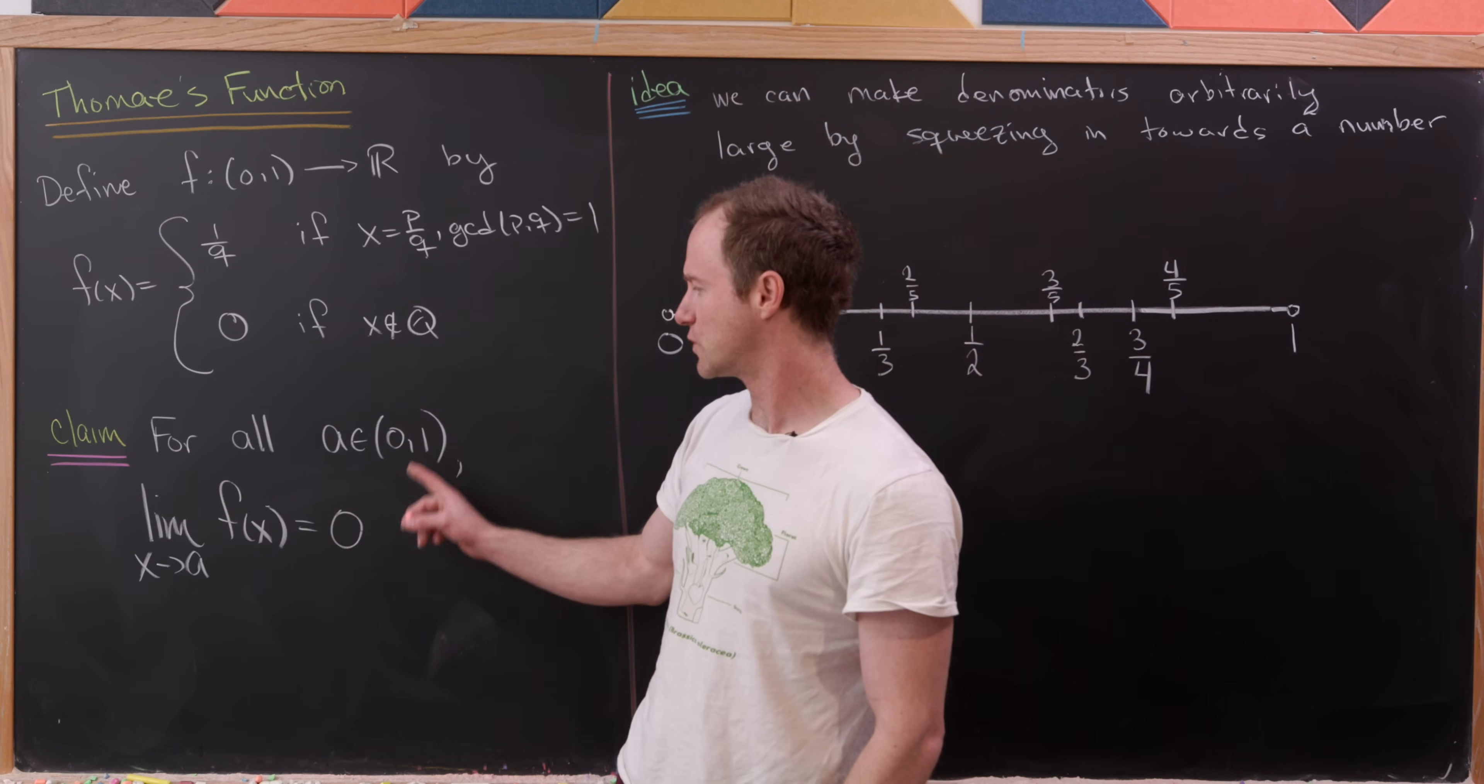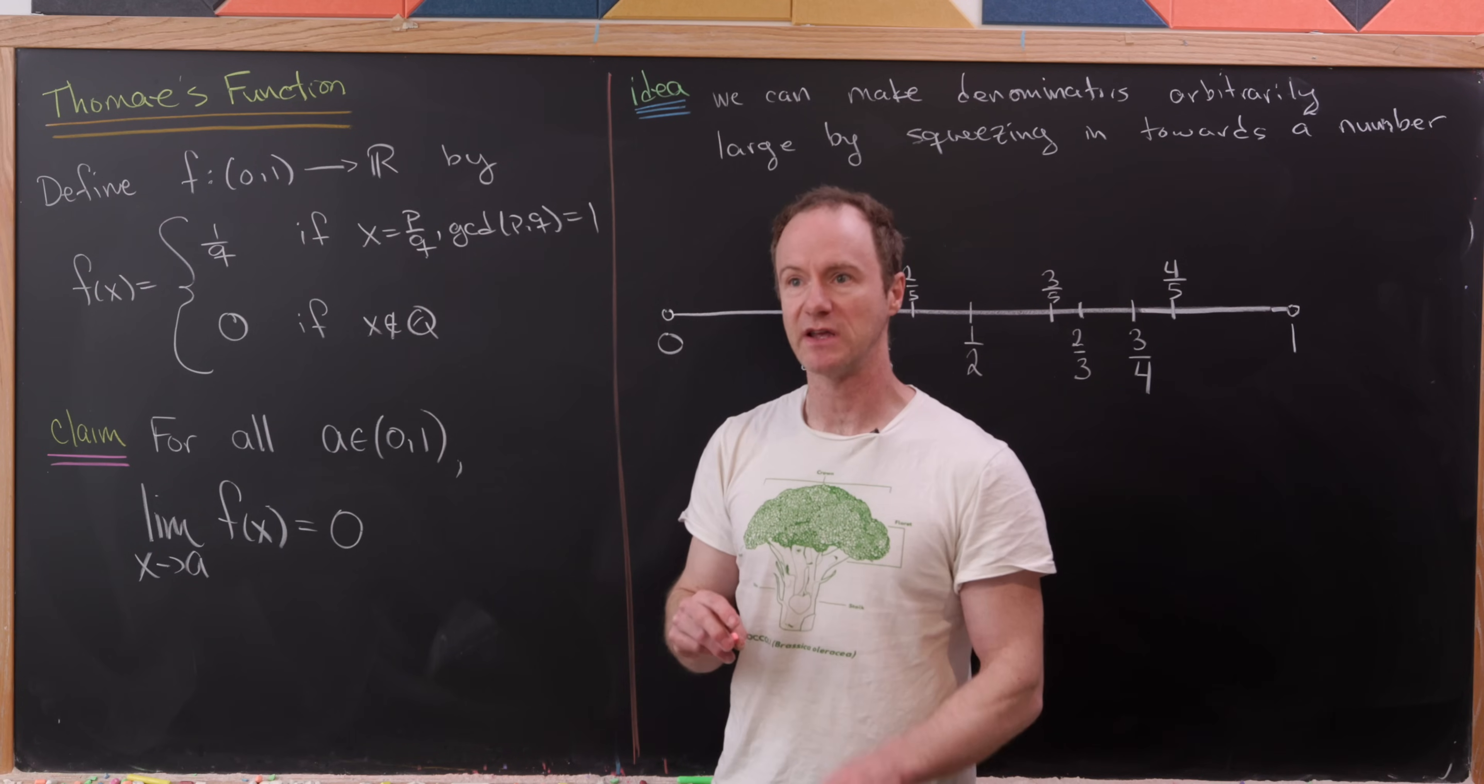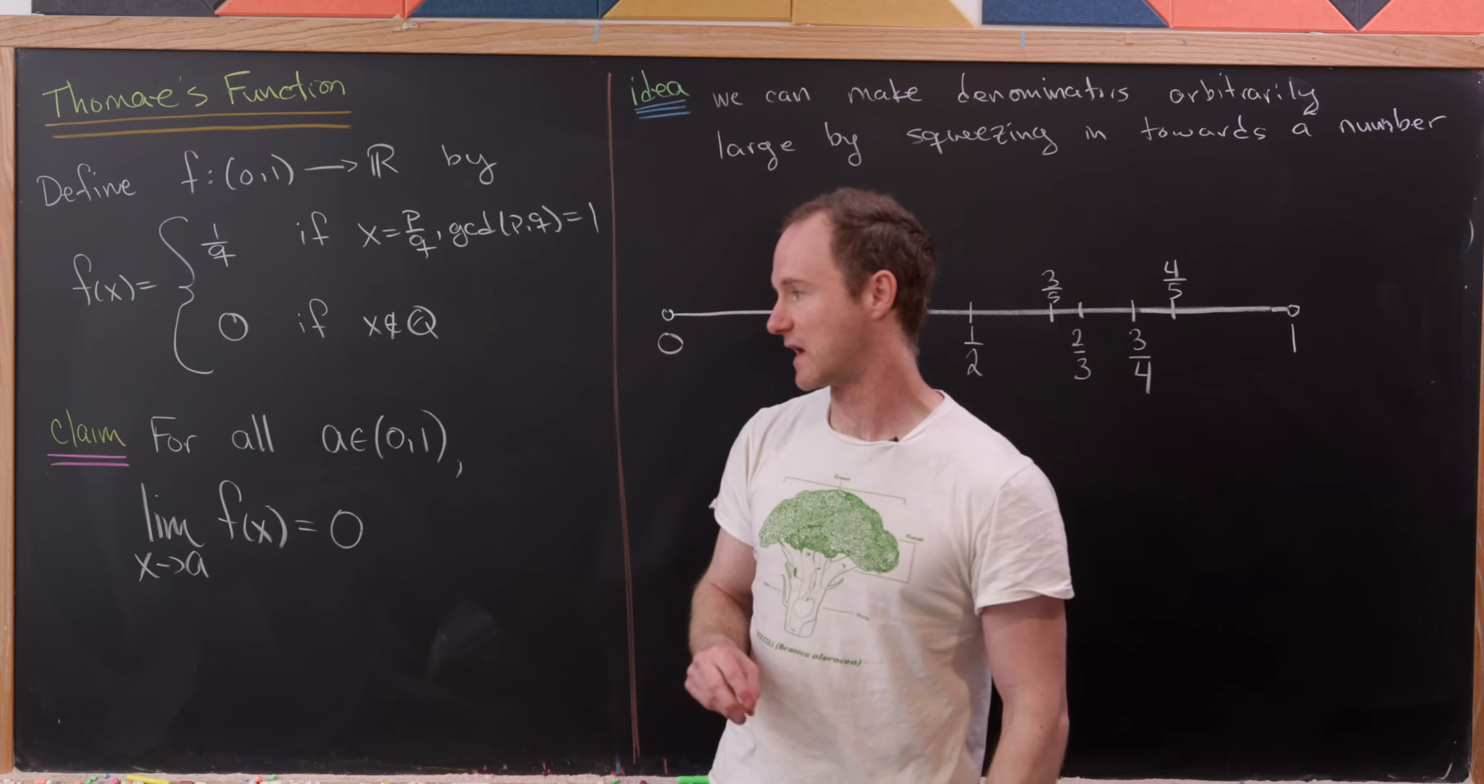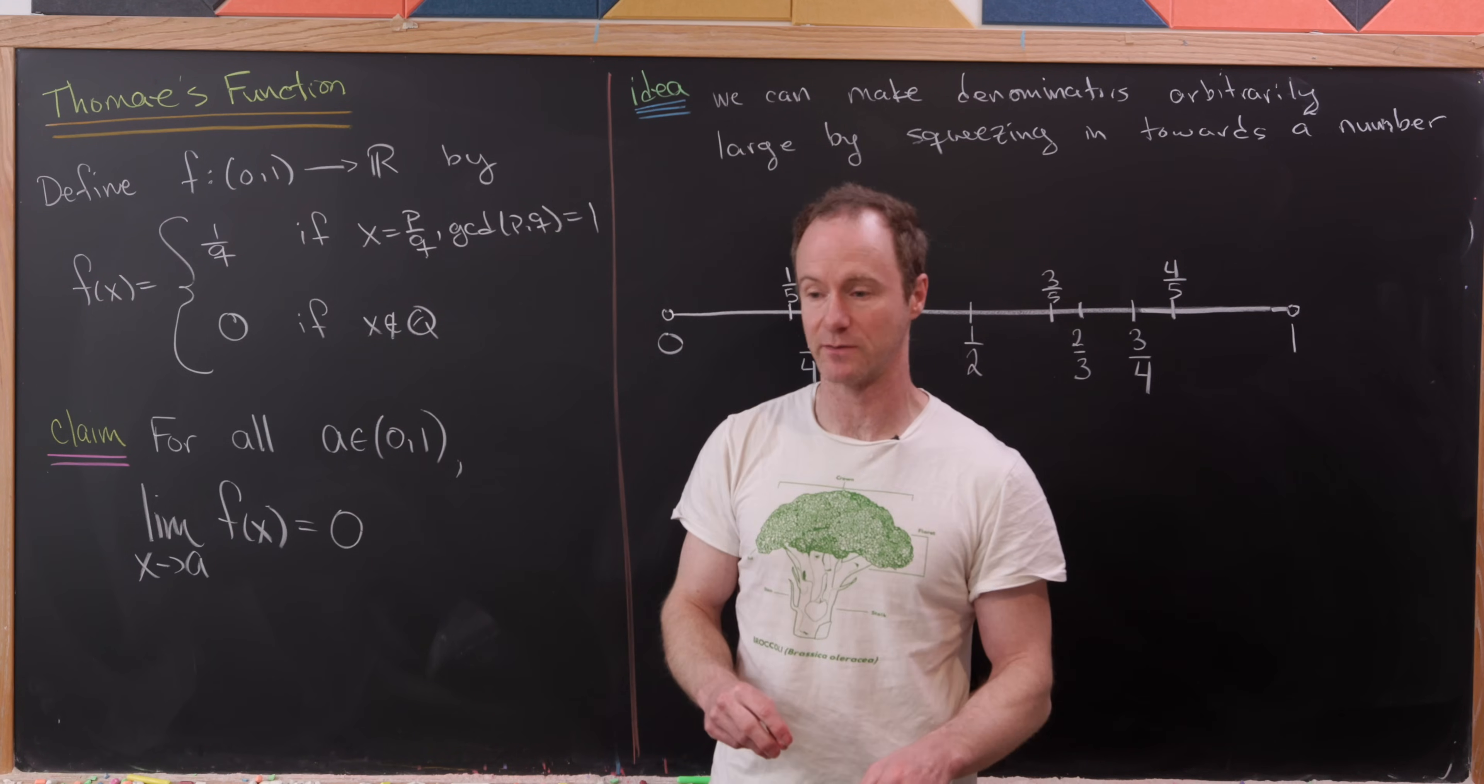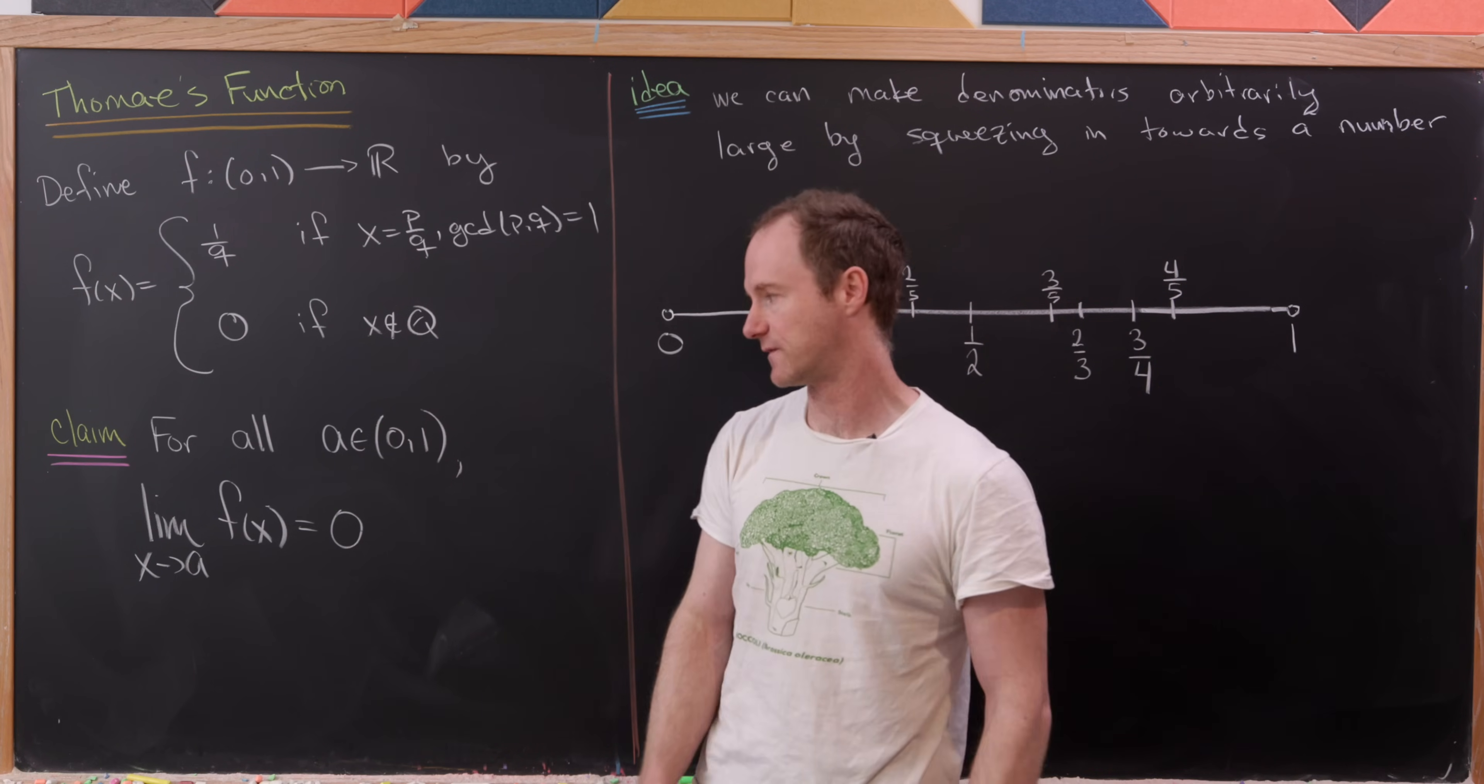Notice that means that this function will be continuous at irrational numbers, because in that case, the limit will equal the function value, and it will be discontinuous at rational numbers, because in that case, the limit will be not equal to the function value.